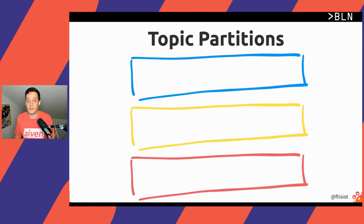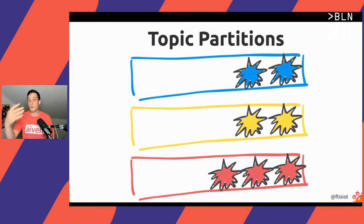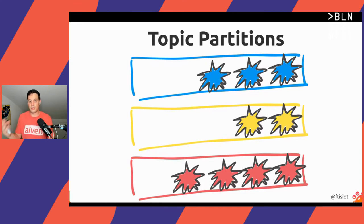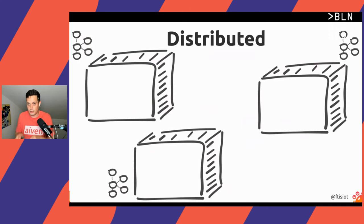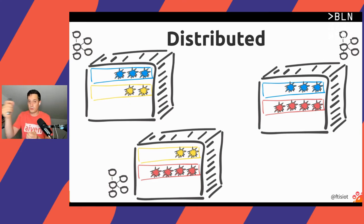Mario's orders could land in the blue partition, Luigi's orders in the yellow partition, and Francesco's orders in the red partition. If we go back to our cluster, what is stored in each node is not the whole topic — it's just a partition. This means the trade-off is not between the whole topic disk size and the broker's disk size, but between just a partition and the broker's disk size.